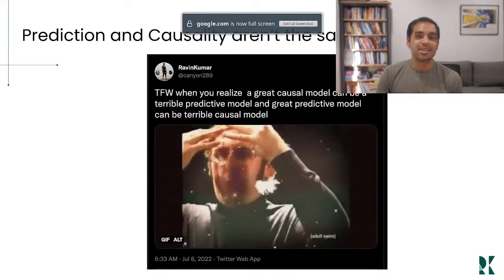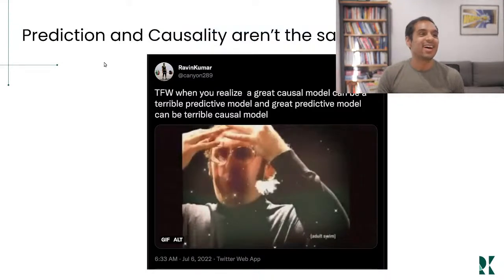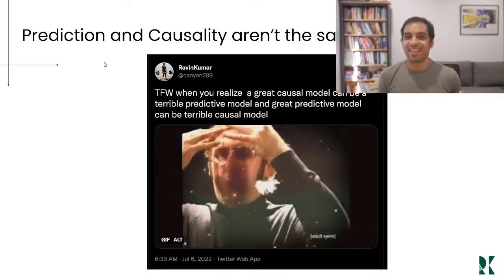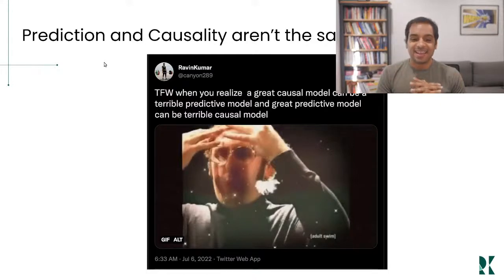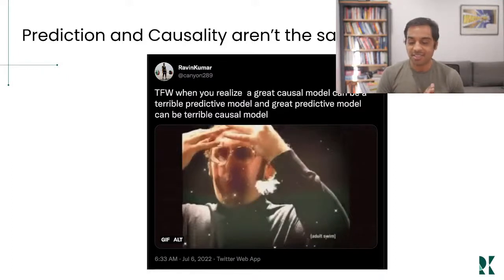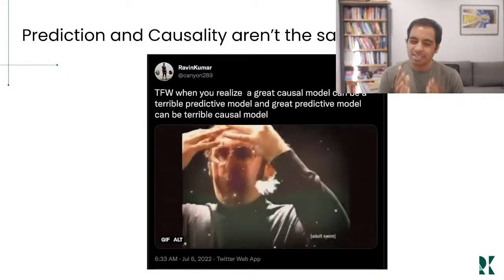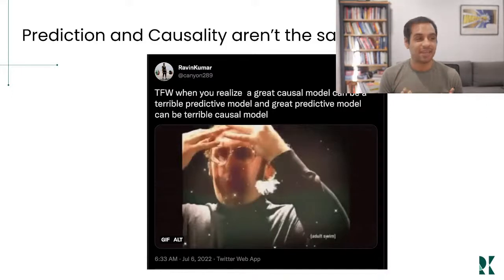That happens because you're conditioning on the collider. Over time, happy people get married, so the unhappy people are the ones who aren't married. If you condition on both, it shows that happiness and age are negatively correlated. This really hurt my brain for a bit. The big takeaway: prediction and causality aren't the same thing.